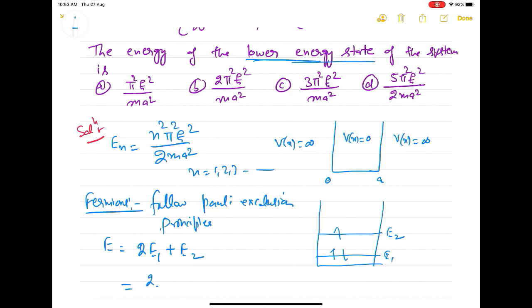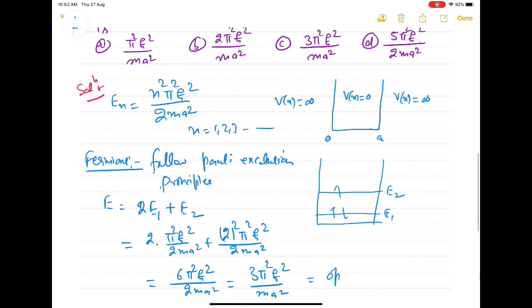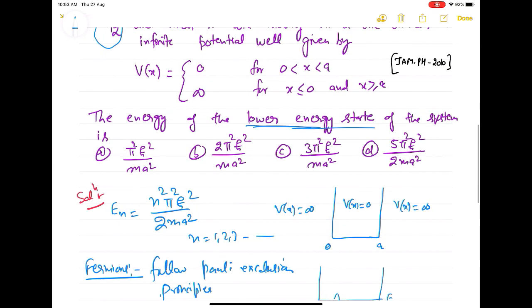This makes it 2 times E₁ is π²ℏ²/(2ma²) and E₂ is 2²π²ℏ²/(2ma²), which in turn will give us 6π²ℏ²/(2ma²), which means 3π²ℏ²/(ma²), which is option C. All right, this question was again from JAM Physics 2010.